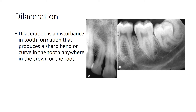Dilaceration is a disturbance in tooth formation that produces a sharp bend or curve in the tooth anywhere in the crown or the root. These are examples of a third molar and a lateral incisor showing dilaceration.